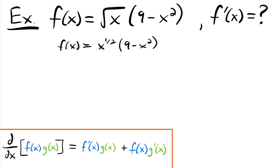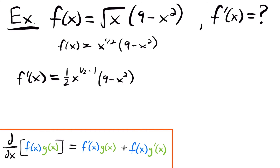Now let's take our derivative. F prime of x is equal to the derivative of our first function — the derivative of x to the one-half power, which is one-half times x to the one-half minus 1 — times the original second function, 9 minus x squared, plus the original first function x to the one-half power, multiplied by the derivative of the second function. The derivative of 9 is 0 and the derivative of negative x squared is negative 2x.